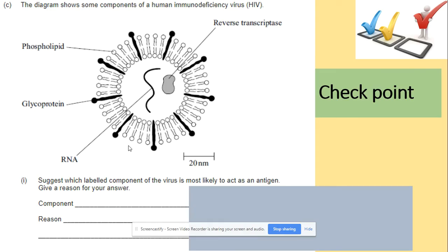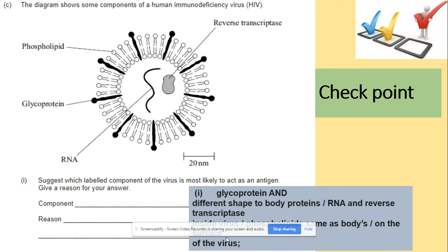Quick question: we have a diagram showing some components of HIV and we need to suggest which labeled component is most likely to act as an antigen. Remember, an antigen is presented on the cell surface of the pathogen. Looking at the diagram, the outermost component is the answer. The antigen is a glycoprotein — it is on the surface of the virus, so that is our answer.